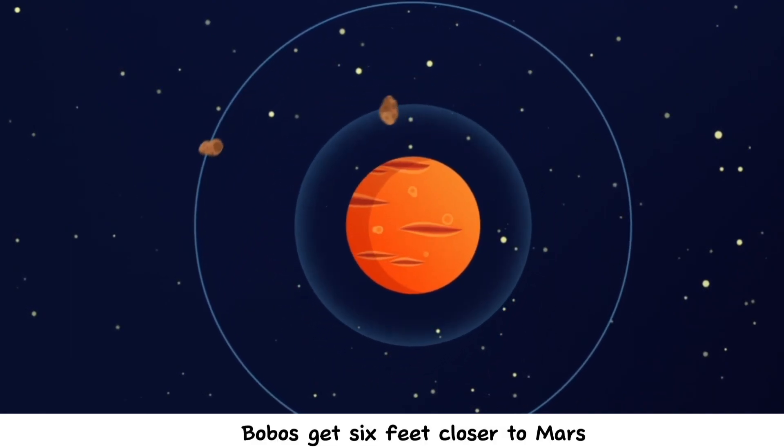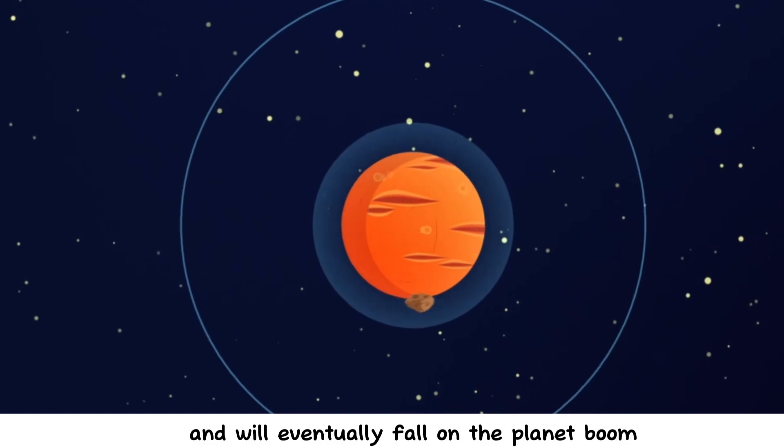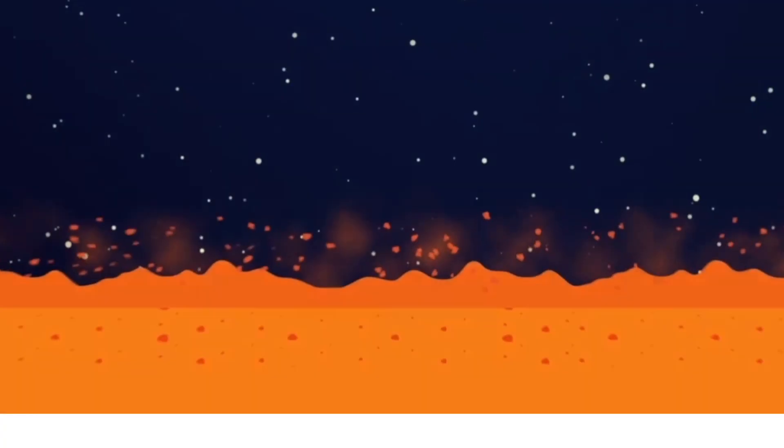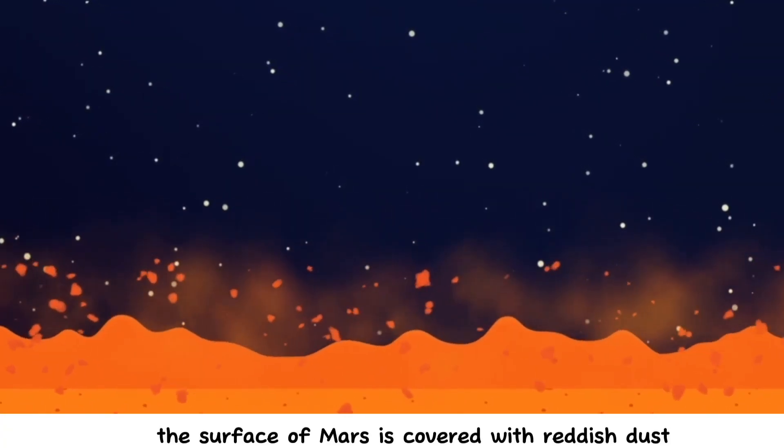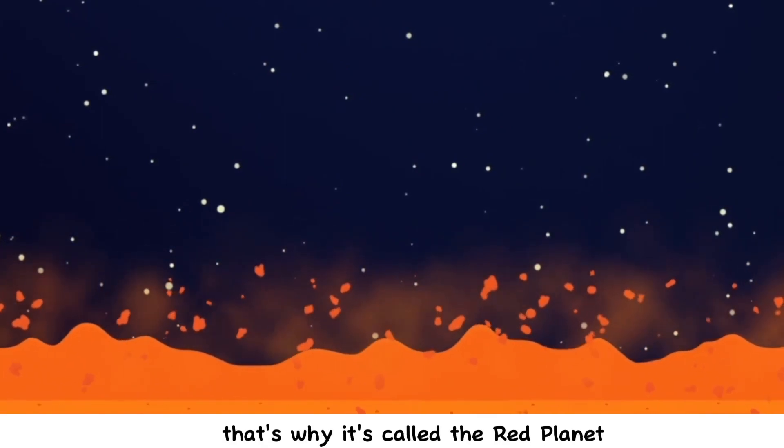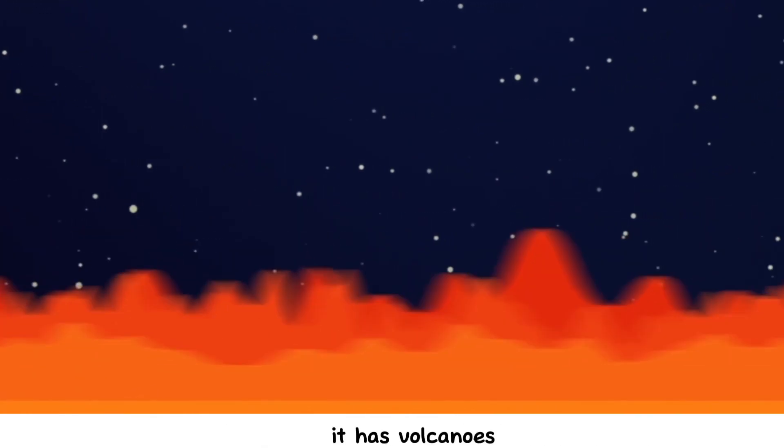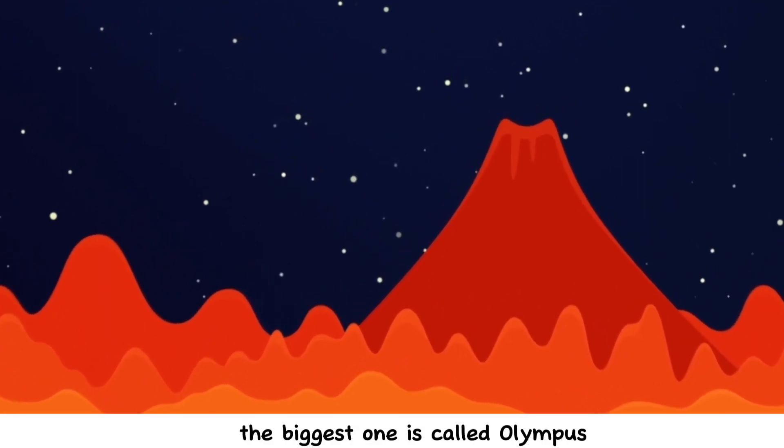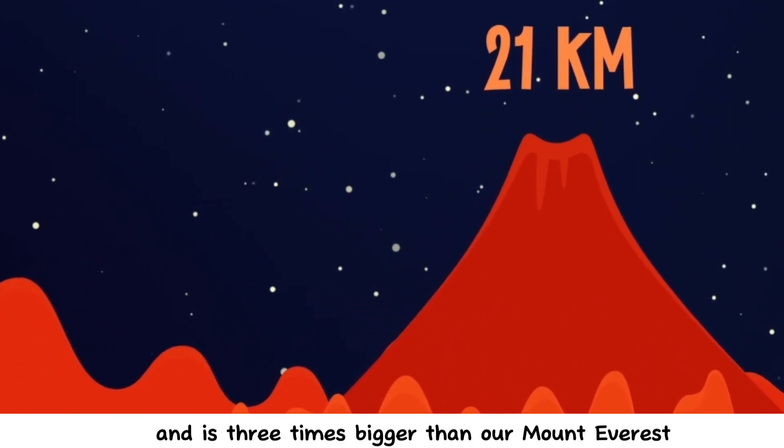The surface of Mars is covered with reddish dust. That's why it's called the Red Planet. It has volcanoes. The biggest one is called Olympus and is three times bigger than our Mount Everest.